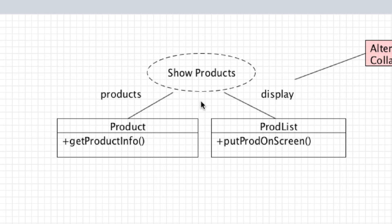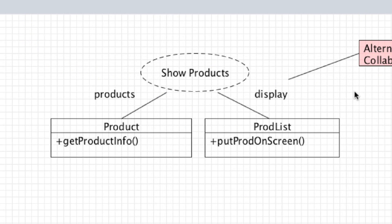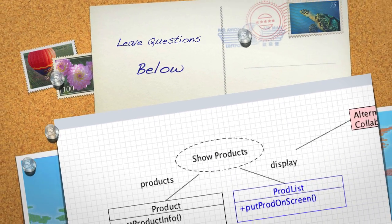In the alternative collaboration view, just like before, we list the task — 'show products' — which is the goal to achieve when you put these two objects together. Then to provide a bit more information, you provide the exact methods that are going to be called: get product information from the product class, and put product on screen. So that's a rundown of component diagrams, composite structures, and more information on relationship arrows and what they mean. Hopefully that answers a lot of questions I've been getting lately. If any other questions come up, please leave them in the comment section below.